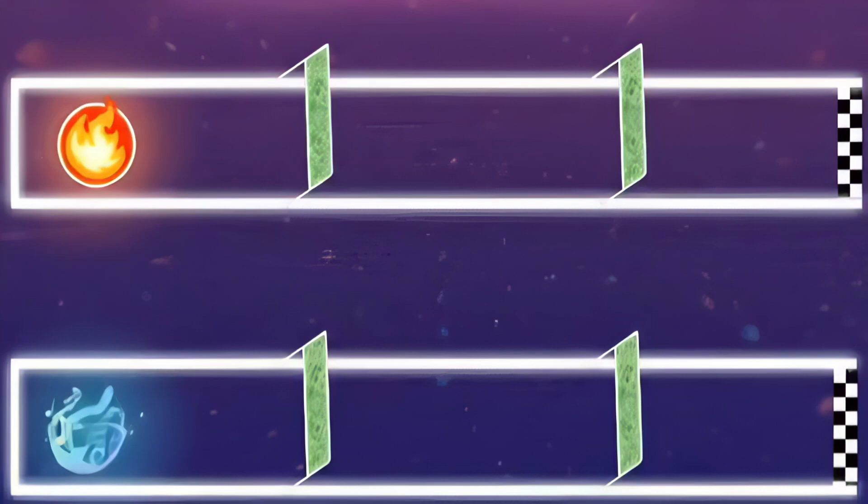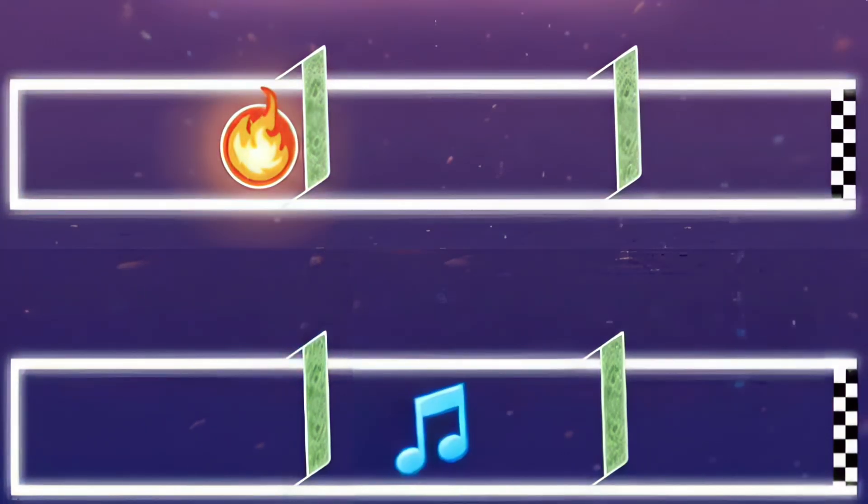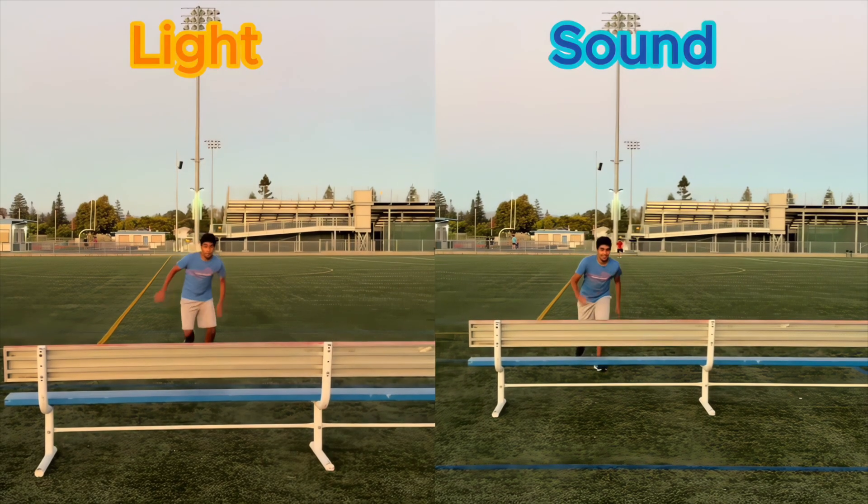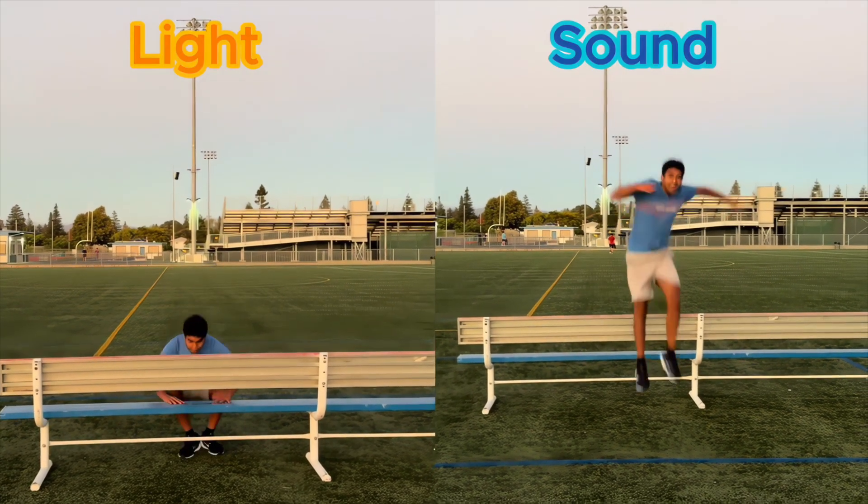So light is a champion of the sprint. But what happens in an obstacle course? Light hits the wall and gets stuck but sound bends around and in a huge upset sound wins! Light's straight path gets blocked but sound can jump around objects.